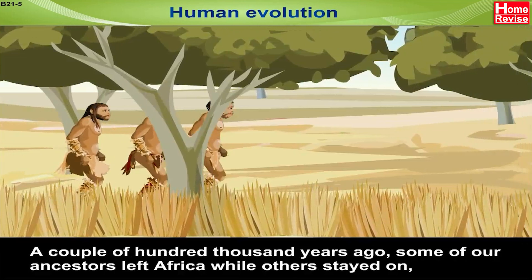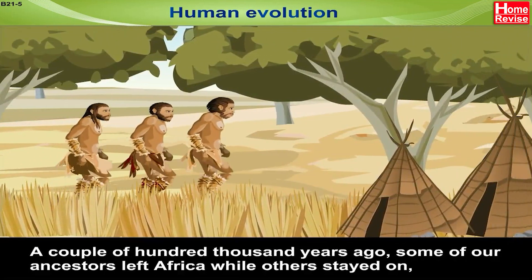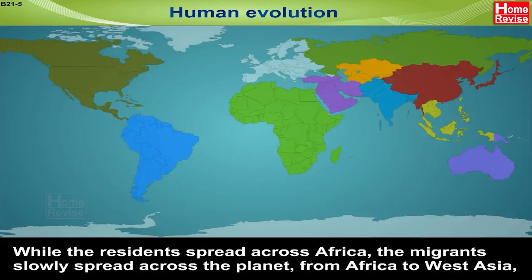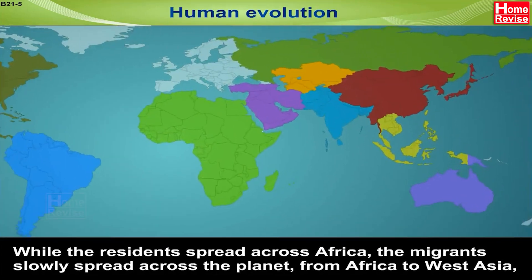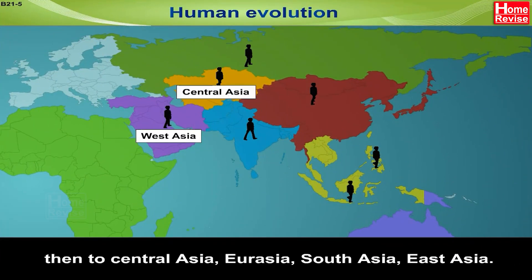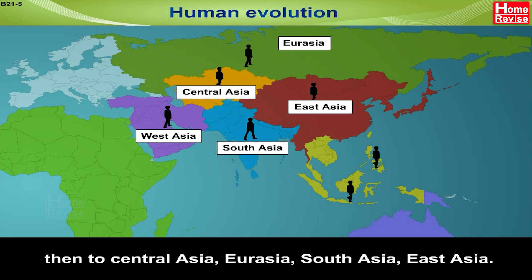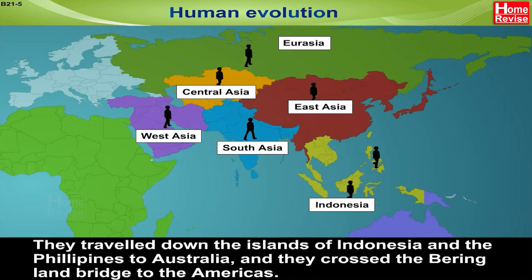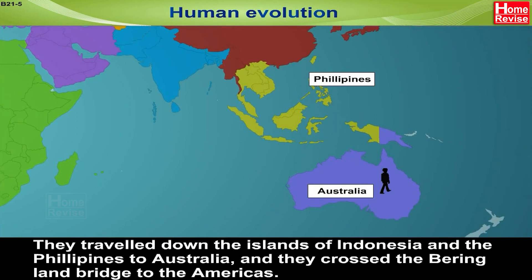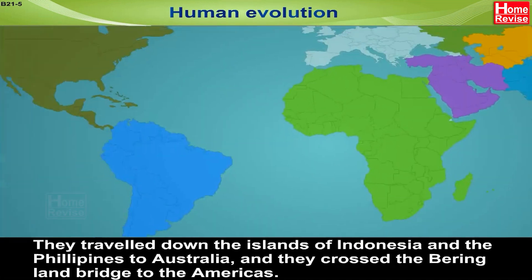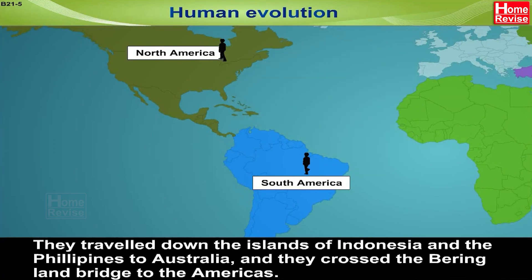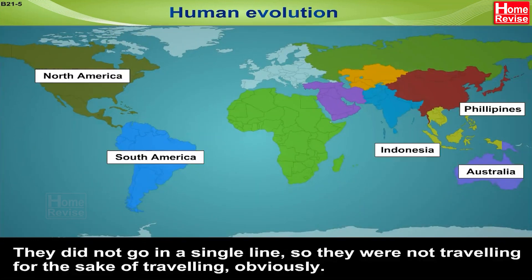A couple of hundred thousand years ago, some of our ancestors left Africa while others stayed on. While the residents spread across Africa, the migrants slowly spread across the planet — from Africa to West Asia, then to Central Asia, Eurasia, South Asia, East Asia. They travelled down the islands of Indonesia and the Philippines to Australia, and they crossed the Bering Land Bridge to the Americas. They did not go in a single line — they were not travelling for the sake of travelling.